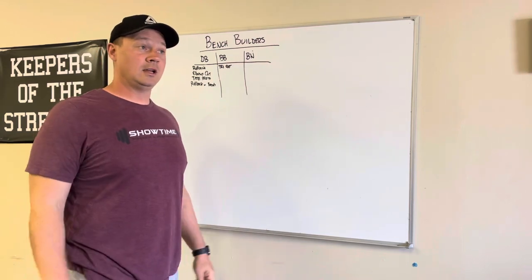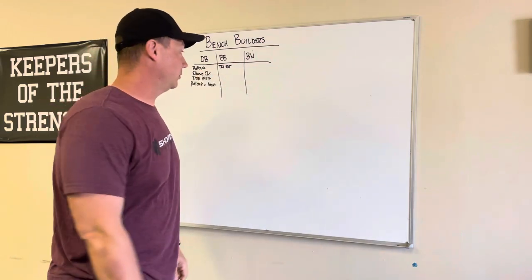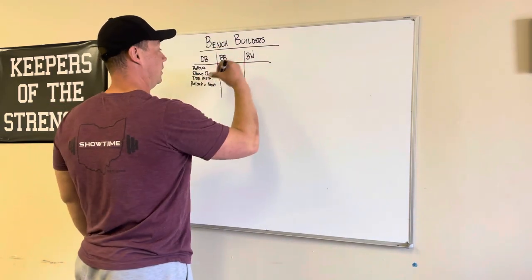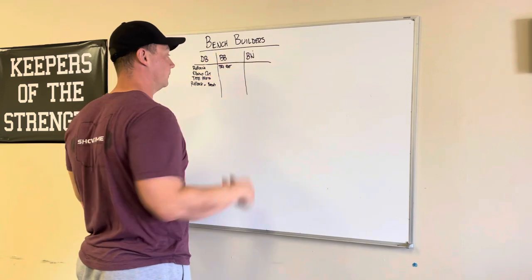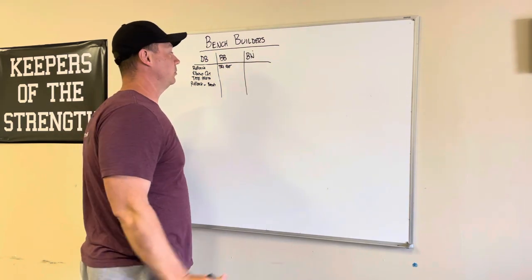I've seen people use 300, 400 pounds on tricep extensions. Just same thing. Elbows up and in and just go heavy. Work these into sets of 8 to 15, but you should be able to push the weight on those.